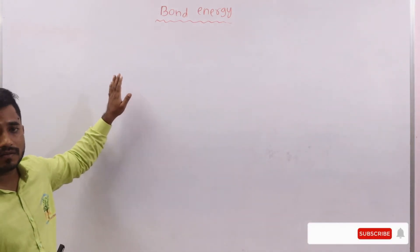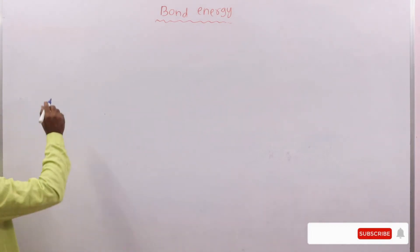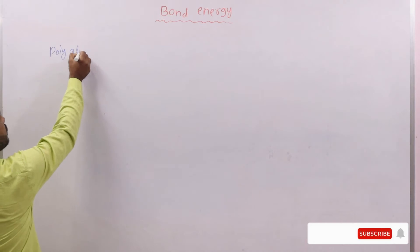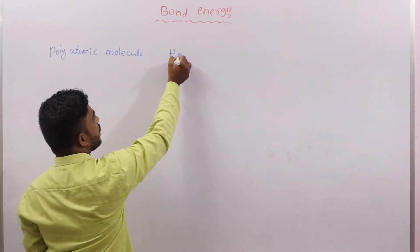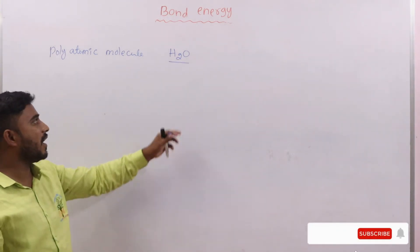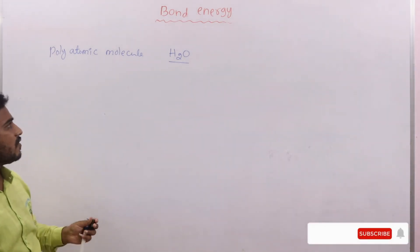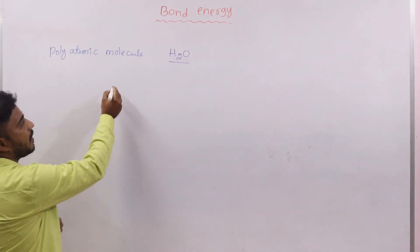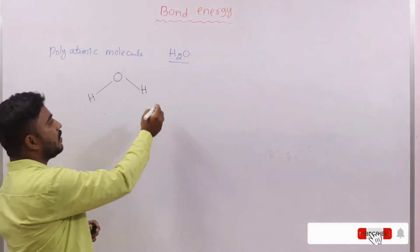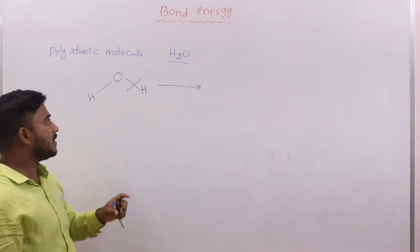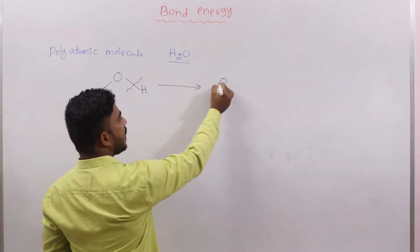Until now we discussed bond energy for diatomic molecules only — H₂, Cl₂, HCl. When we come to polyatomic molecules, a polyatomic molecule is a molecule formed by more than two atoms. For example, H₂O — two hydrogen atoms and one oxygen atom, so three atoms are present — that's why it is a polyatomic molecule. The water molecule has an angular, V-shape or bent structure.